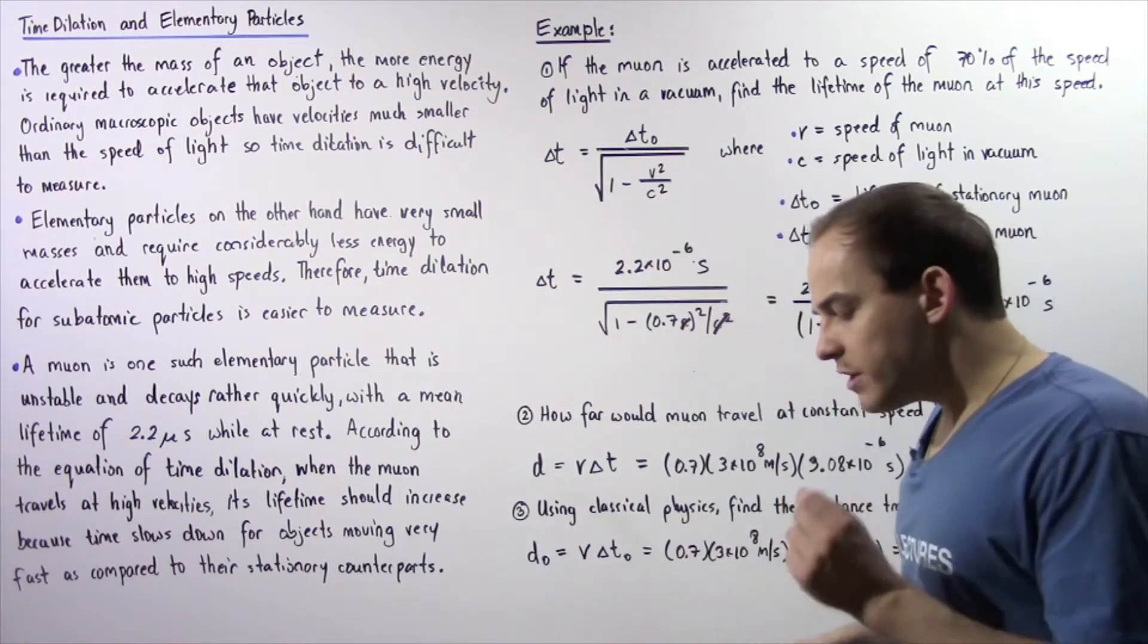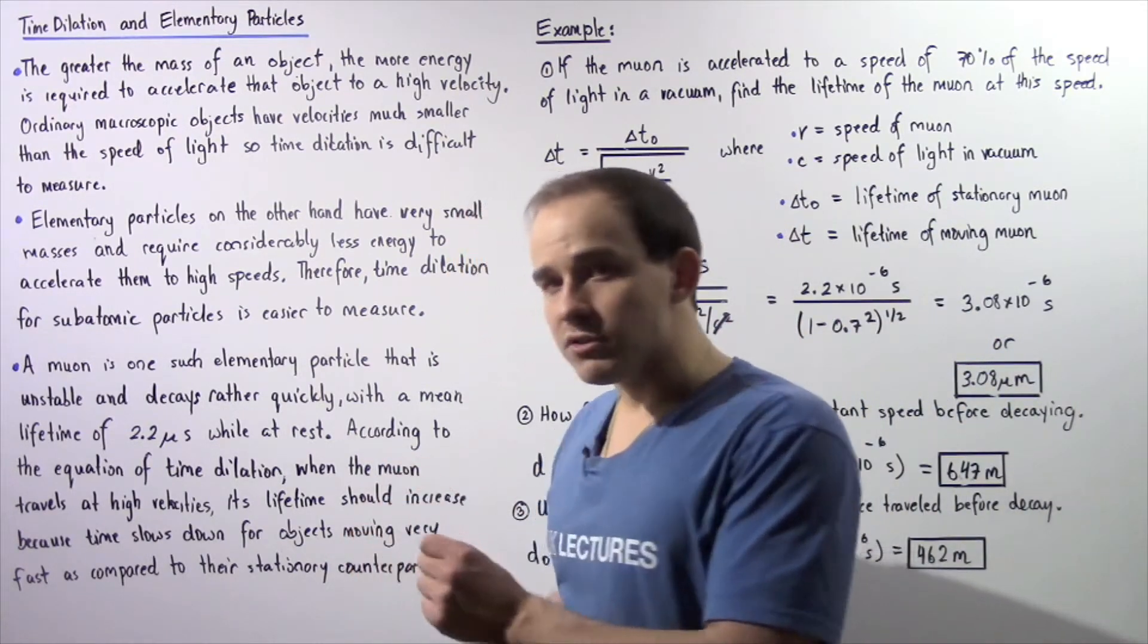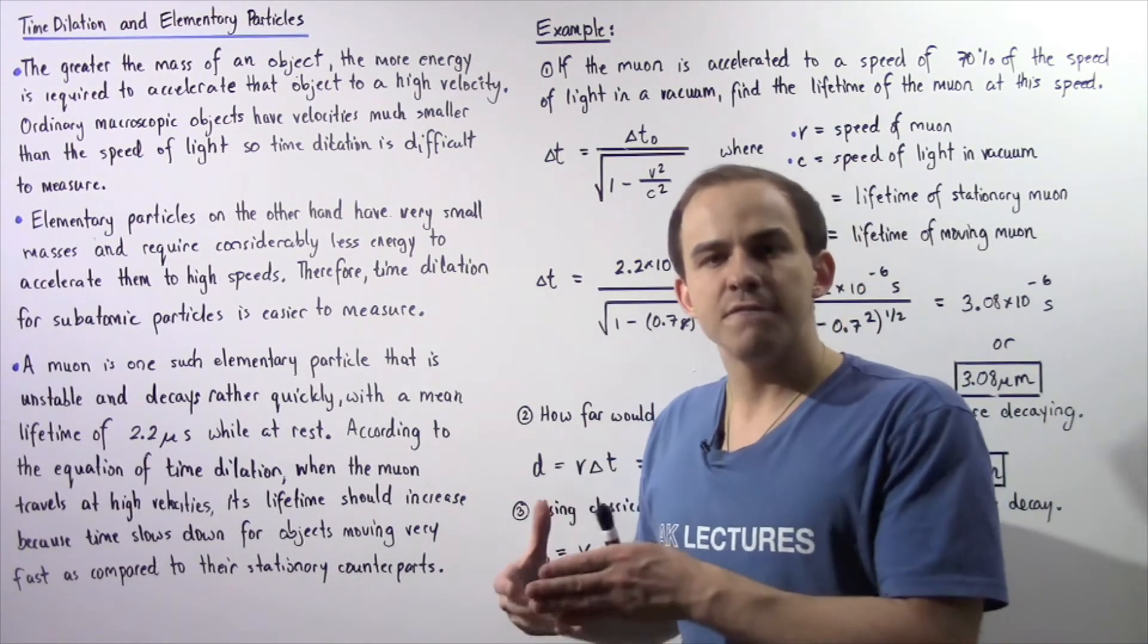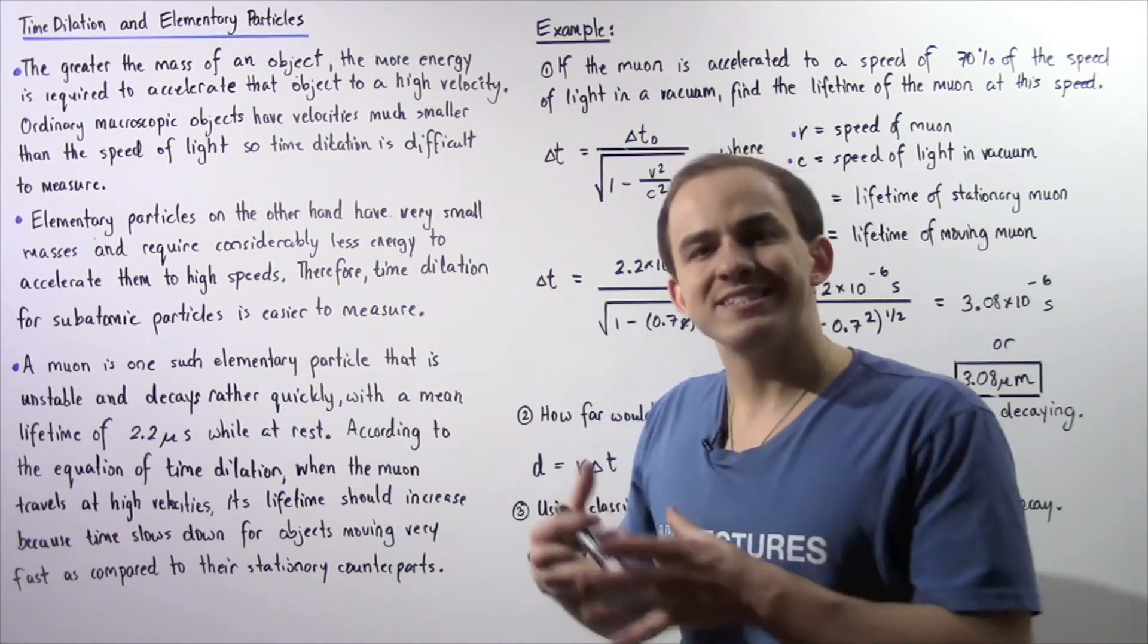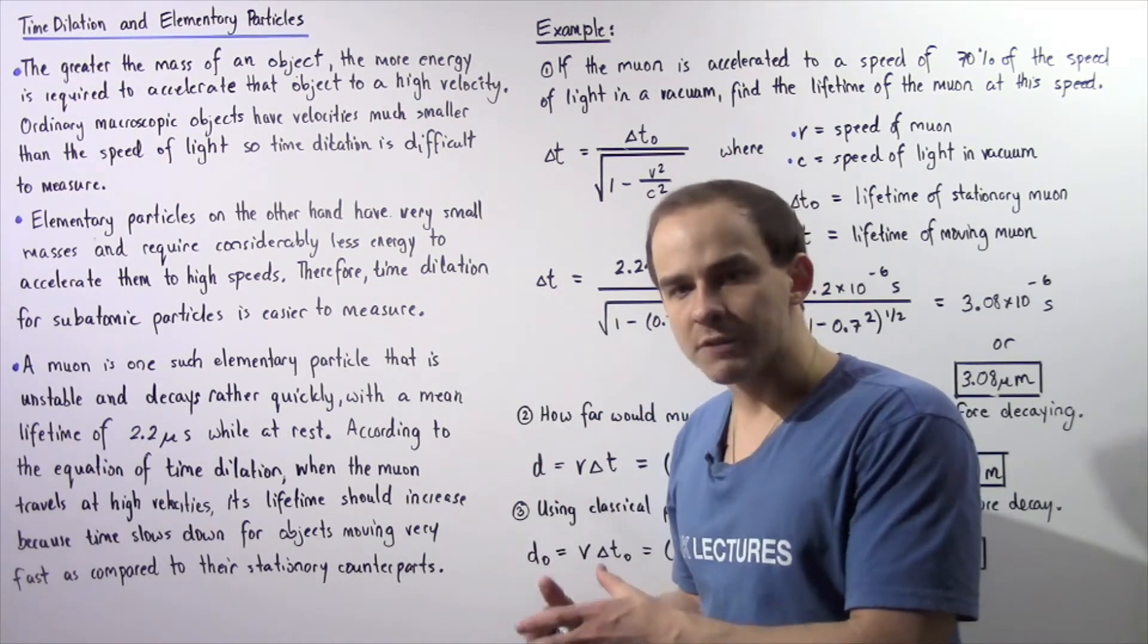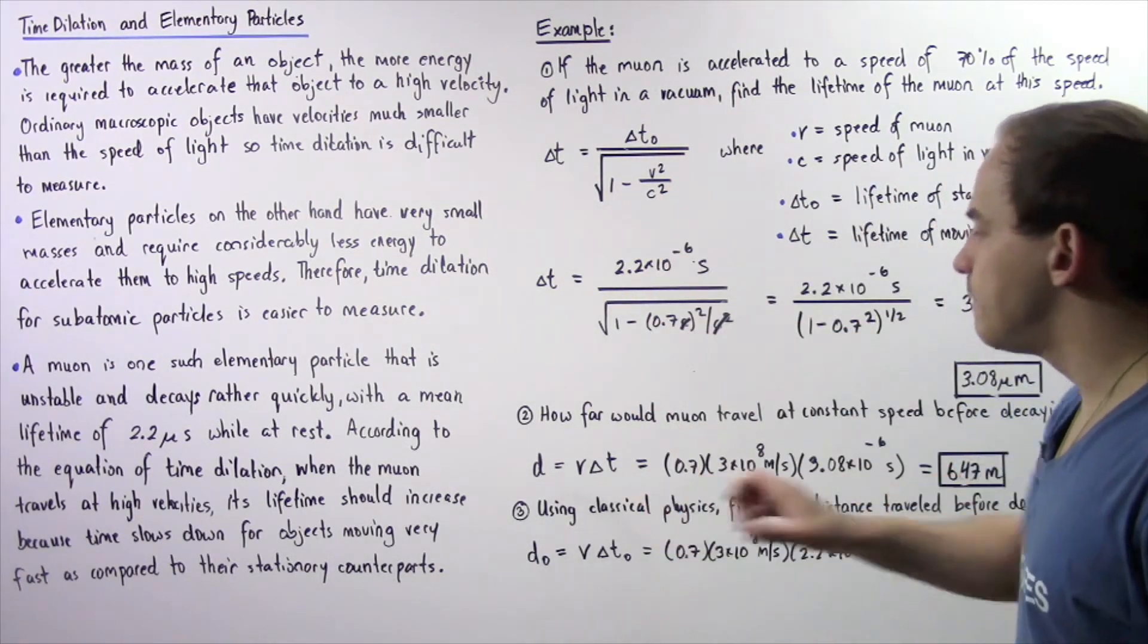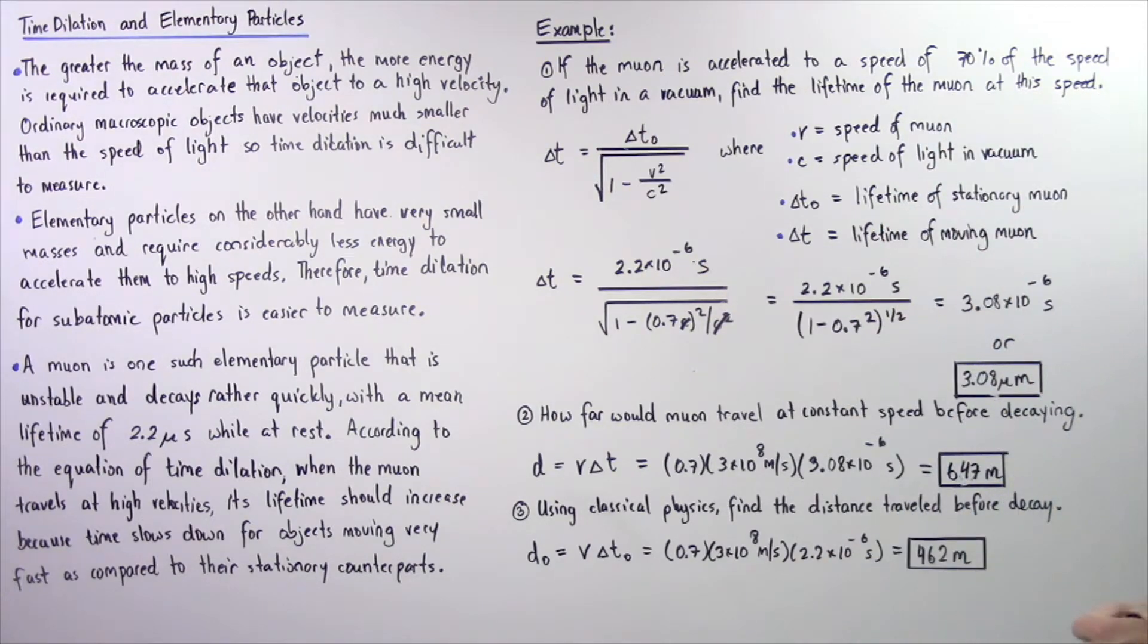Now according to time dilation, if our muon travels with a very high velocity, the lifetime of that muon should technically increase with respect to the stationary counterpart. So to see exactly what we mean, let's look at the following example. So let's begin with part one.